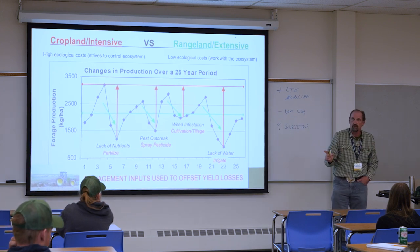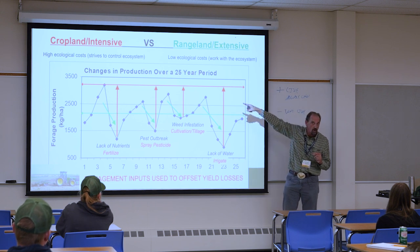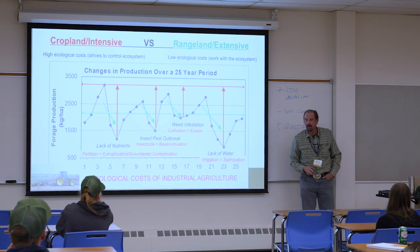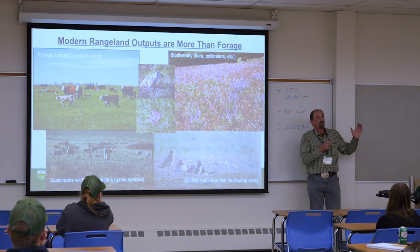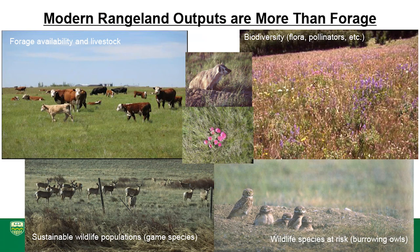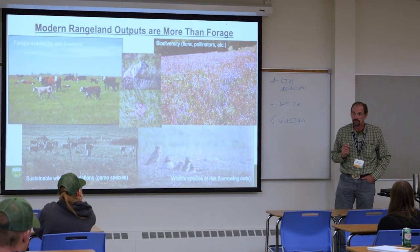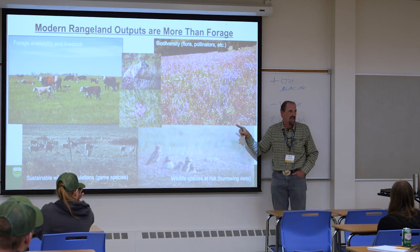So if you take nothing away from what I'm telling you, think about this management contrast. I'm not telling you whether you should be on the rangeland side or the cropland side, but understand that this management philosophy spectrum exists and it's real. Rangeland outputs are way more than forage nowadays. The discipline evolved around forage, but it's not just about forage now — it's about biodiversity, wildflowers and pollinators, and species at risk. Burrowing owls rely on rangelands. No rangeland, no burrowing owls. No rangeland, no sage-grouse in Alberta.